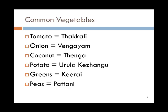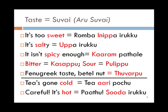Greens — any kind of greens like spinach, for example — is keerai. Peas is patani. Now we have something called arisuvai in Tamil, which refers to the six different tastes. Let's go over them. Suvai basically means taste.